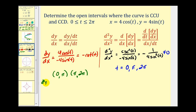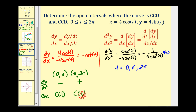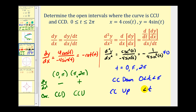We determine the sign of the second derivative in each interval. For the first interval, using t equals pi over two: sine of pi over two is one, so we get negative one over four times one, which is negative. The curve is concave down on the interval from zero to pi. For the second interval, using t equals three pi over two: sine of three pi over two is negative one, and negative one cubed is still negative one, so we get negative one over four times negative one, which is positive. The curve is concave up on the interval from pi to two pi.